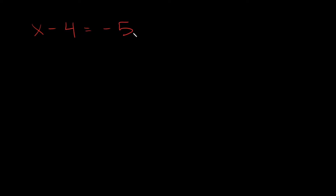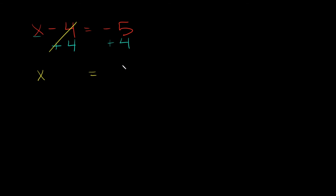Now I'm going to throw some negative numbers at you. x minus 4 is equal to negative 5. Step one: isolate the variable. I want x completely by itself, so I need to get rid of this minus 4. Since I have a minus 4, I'm going to add 4 instead. Step two: whatever I do to one side, I have to do to the other. So I add 4 here as well. Negative 4 plus 4 goes to 0. Then negative 5 plus 4 equals negative 1. So x is equal to negative 1.